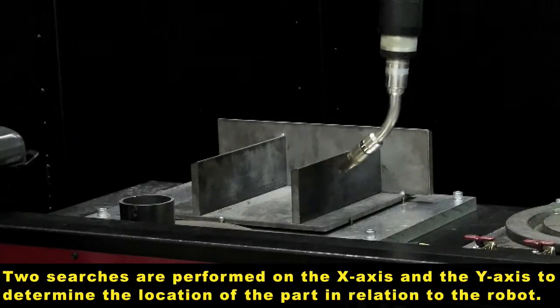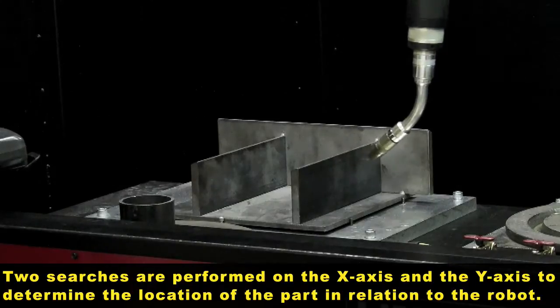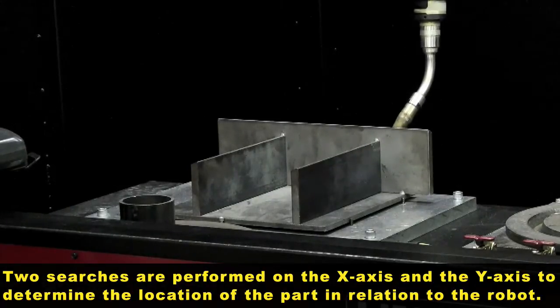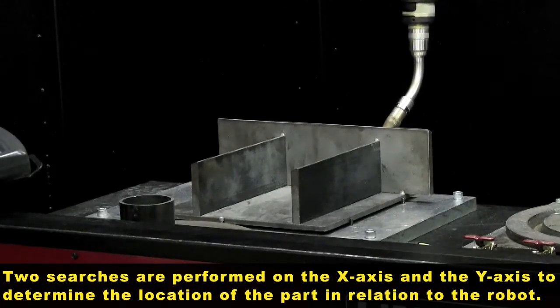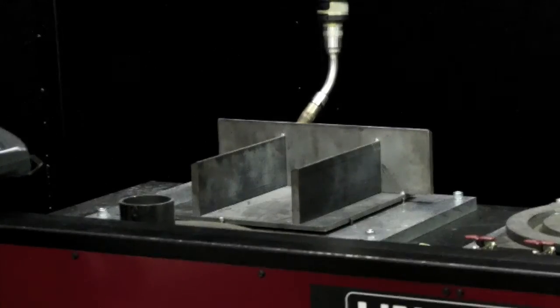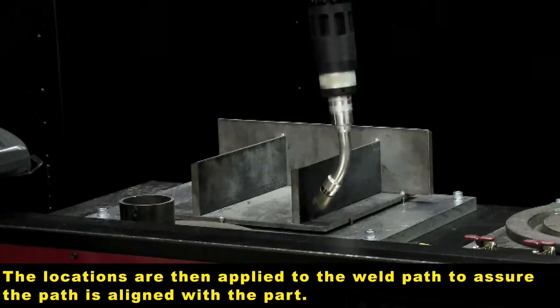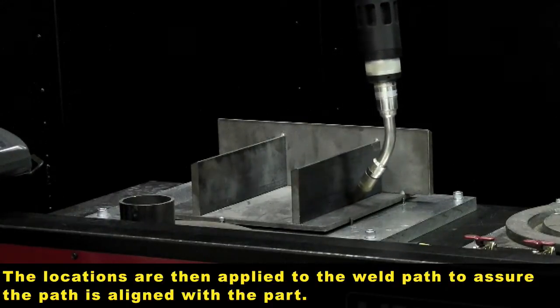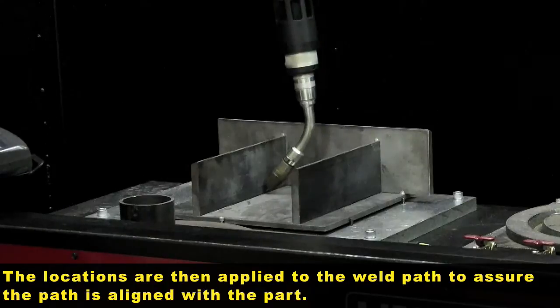As we run this program, you'll see we are going to perform two searches in the X direction, followed by two searches in the Y direction. This will give us an updated plane for where this part is located relative to the robot, and then we apply that offset to the weld path to ensure it's properly placed.